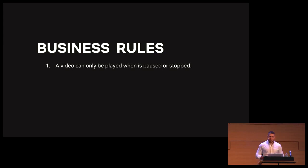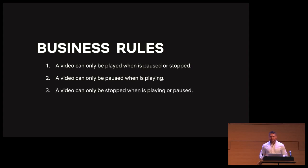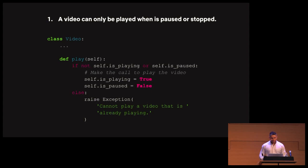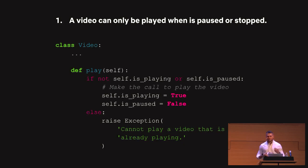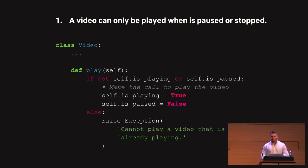Let's talk about some business rules. A video can only be played when it's paused or stopped. A video can only be paused when it's playing. And a video can only be stopped when it's playing or paused — very simple rules, just like a regular video player. For rule number one, we modify our play function and check if the video is not playing or is paused, make the code play the video, and update our isPaused flag. If this condition is not satisfied, we raise an exception. There is some assumption here that leads to fragile code the moment you introduce new states or new business rules.